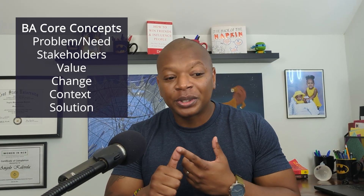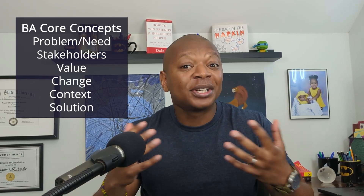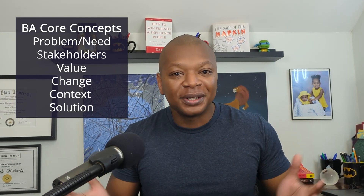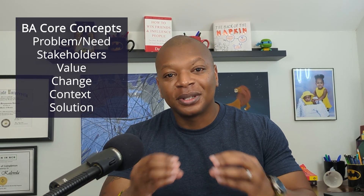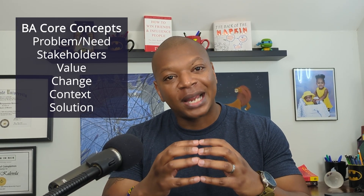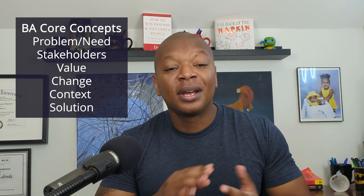And the Agile BA's job in all of this — which is really kind of the same as in Waterfall — is to create a clear understanding around the problem or need, the stakeholders, the intended value of the change, the change itself, the things that are going to change around it, the context — all the things in the environment that are causing this problem or need — and then eventually the solution, the thing that your team is actually going to deliver that hopefully delivers value to these stakeholders and addresses the problem or need.